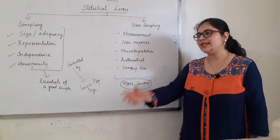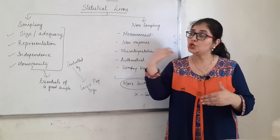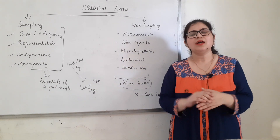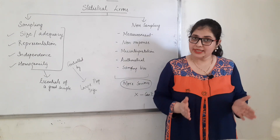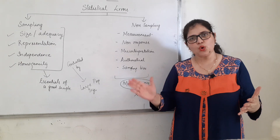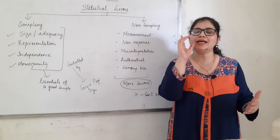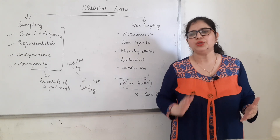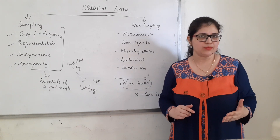Third non-sampling error is misinterpretation. Enumerator ji, banda kuch keh raha hai, inhone kuch samaj mein aaya, usne kuch aur kaha tha, inhone kuch aur likh diya — absolute misinterpretation. Khas kar if the enumerator has not been trained, he does not understand things — toh yeh misinterpretation ka error ho sakta hai. And as a person who is analyzing it, there is nothing you can do about it.